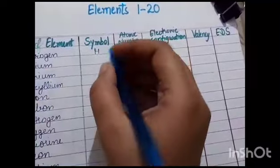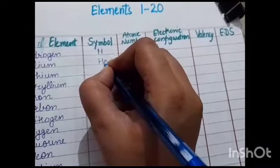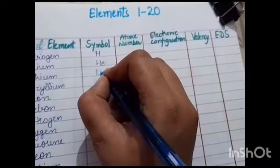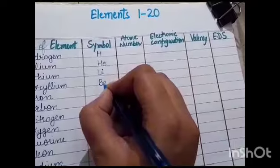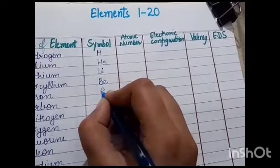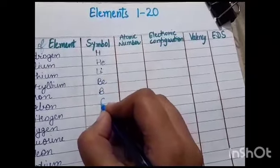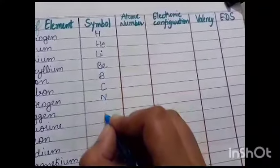The symbol for helium is capital H small e. For lithium, Li. For beryllium, Be. For boron, it's capital B. For carbon, C. For nitrogen, N.